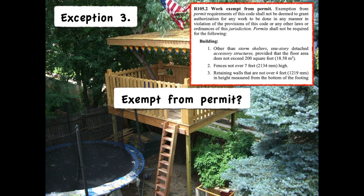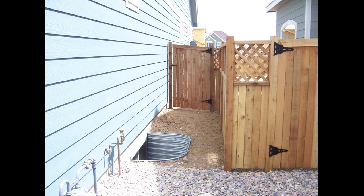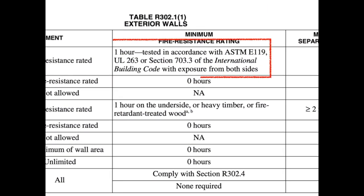The IRC allows structures up to 200 square feet with no permit. When fire separation distance does apply, if the face of the wall has a 5-foot or greater fire separation distance, then no protection whatsoever is required. But if it's less than 5 feet, then it must be provided a 1-hour fire resistance rated wall with exposure from both sides, protecting a fire in either direction.